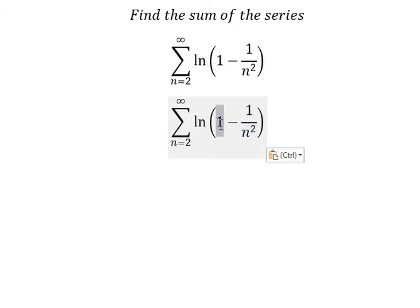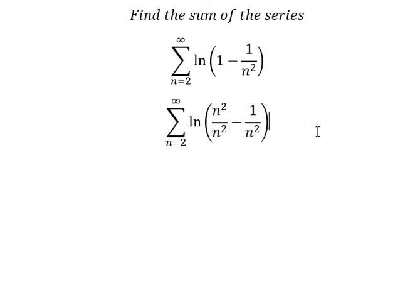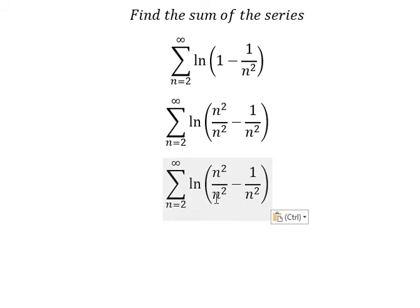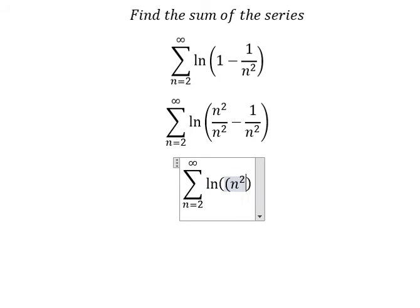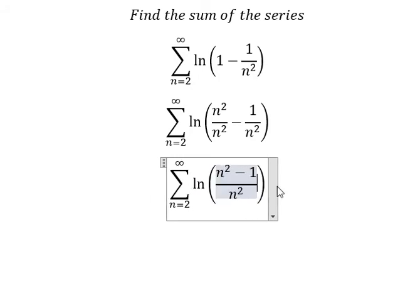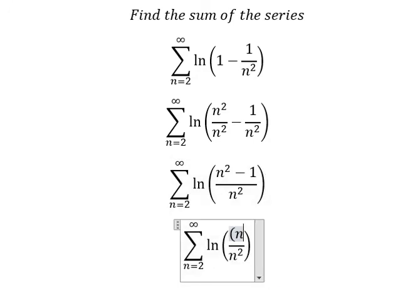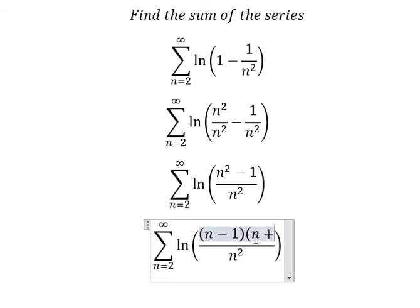Number one, we rewrite this as 1 over n squared because I want to do common denominator with n squared here. So we will have n squared minus 1 over n squared. Next, n squared minus 1 we can factor as n minus 1 multiplied by n plus 1.